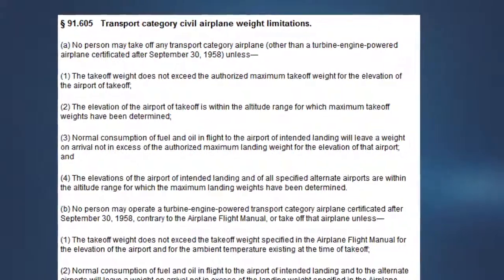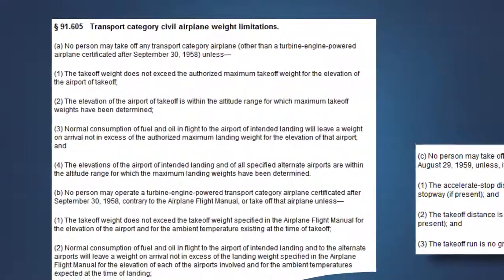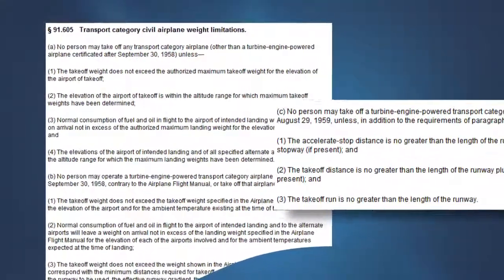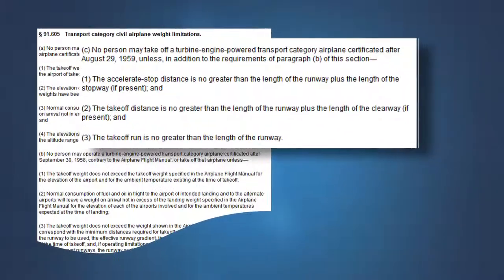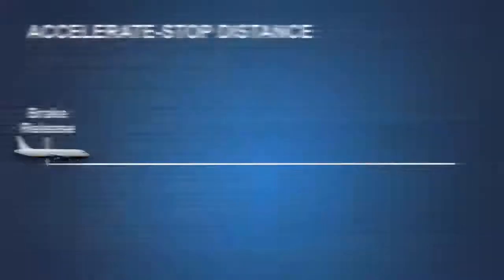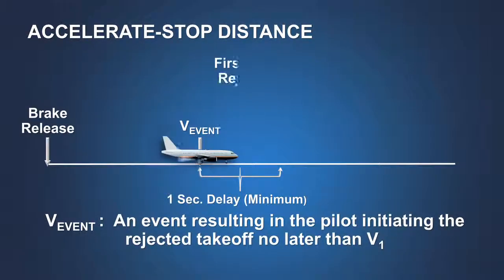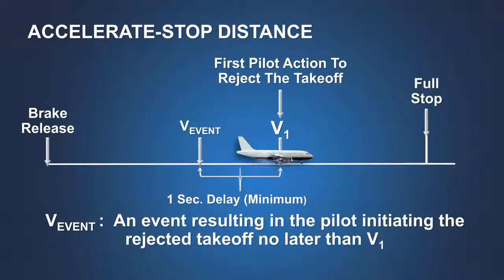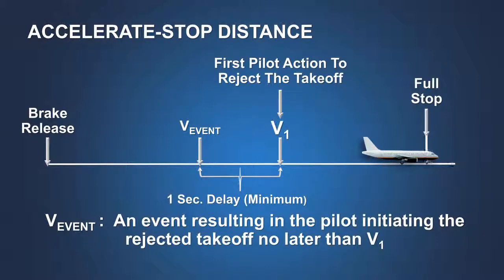A requirement of transport airplane performance planning is determining that the takeoff can be safely conducted on the length of runway declared usable for takeoff. The certification rules for these airplanes prescribe three distances that must be considered: the accelerate stop distance, the takeoff distance, and the takeoff run. Of particular importance is accelerate stop distance — the distance required to accelerate to a point in the takeoff, then in response to an event, take the first action to reject the takeoff at a speed no greater than V1 and to bring the airplane safely to a stop.